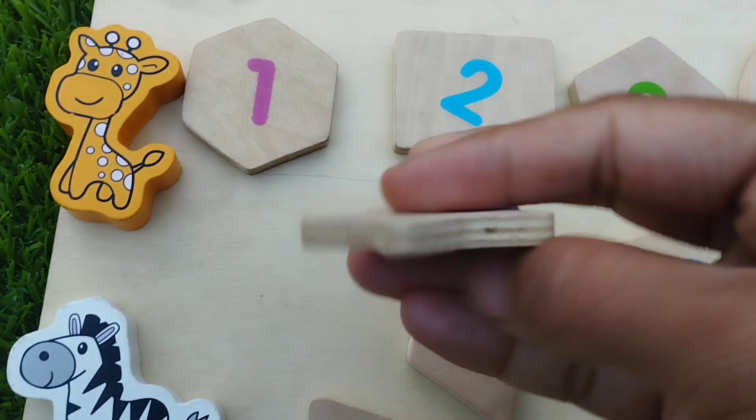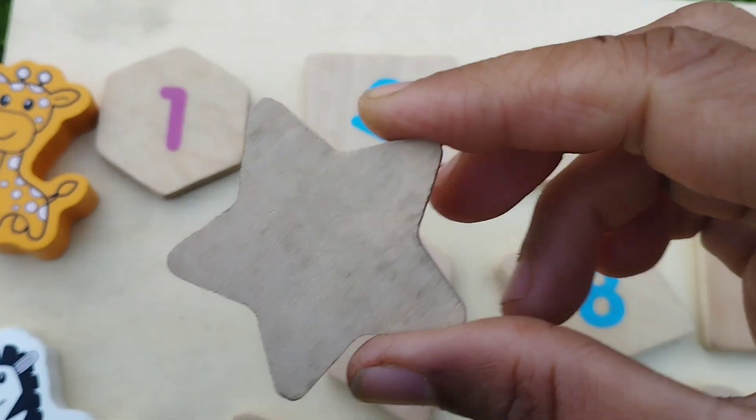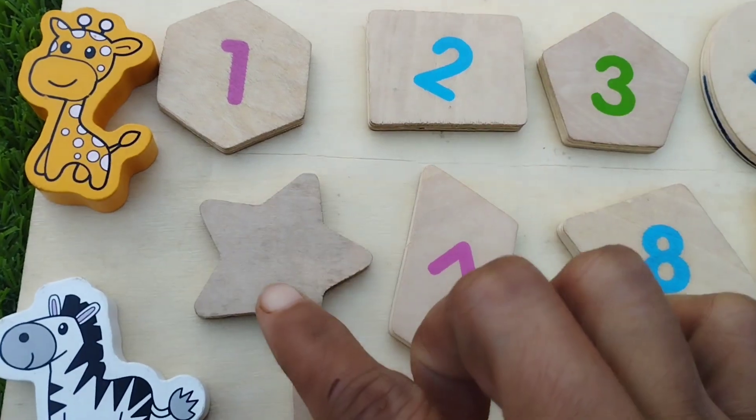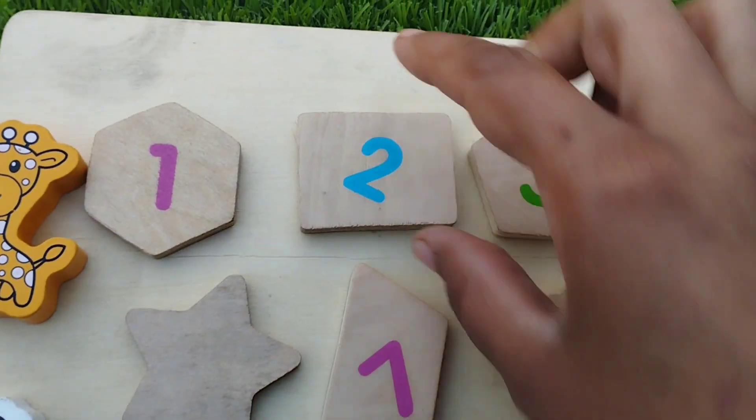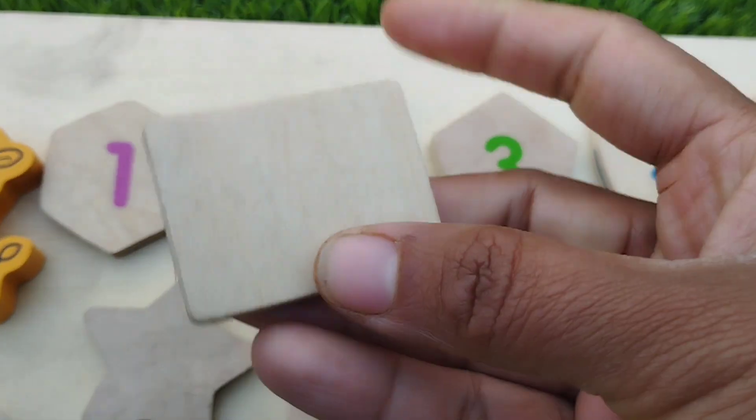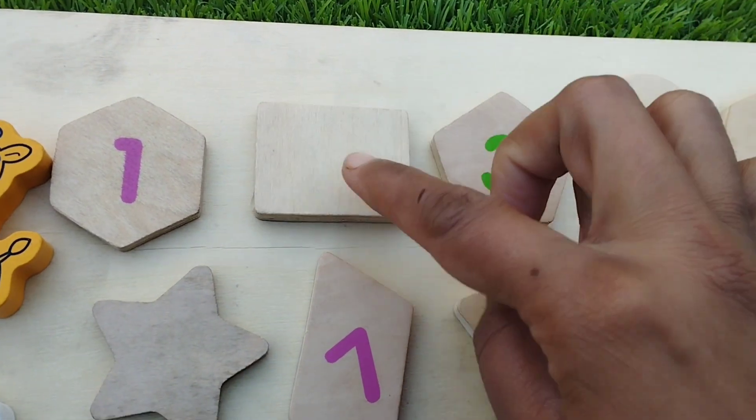The first shape is a star shape. This is a star shape and the number is 6. The next shape is a rectangle. This is a rectangle shape and the number is 2.